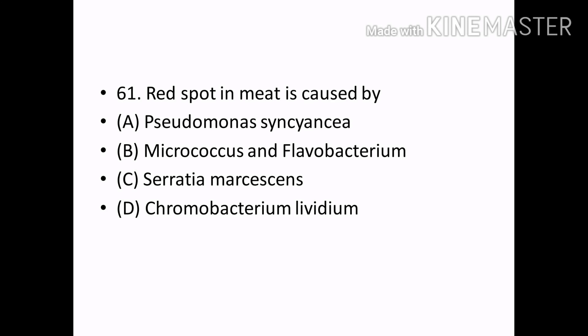Red spot in meat is caused by: Options — Pseudomonas Insinia, Micrococcus and Flavobacterium, Serratia marcescens, Chromobacterium lividum. Correct answer: Option C — Serratia marcescens.